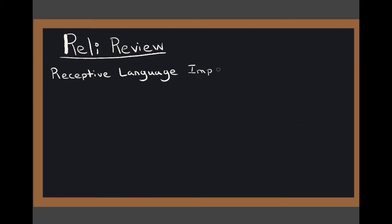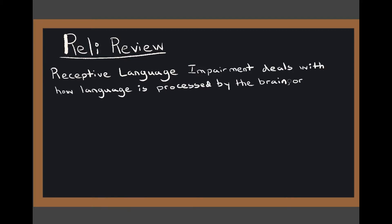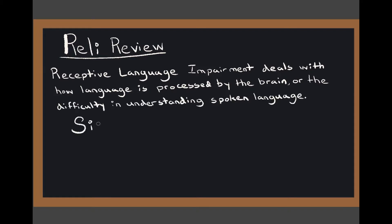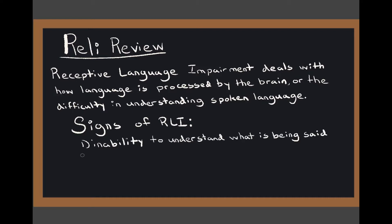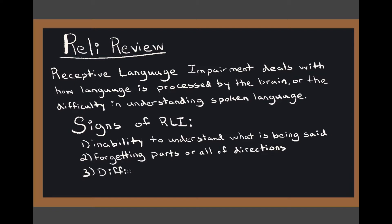Receptive language impairment deals with how language is processed by the brain, or the difficulty in understanding spoken language. Signs of RLI include inability to understand what is being said, forgetting parts or all of directions, and difficulty organizing one's thoughts.